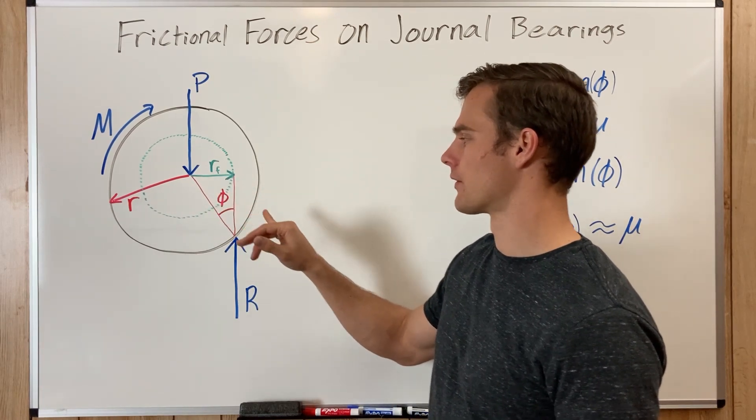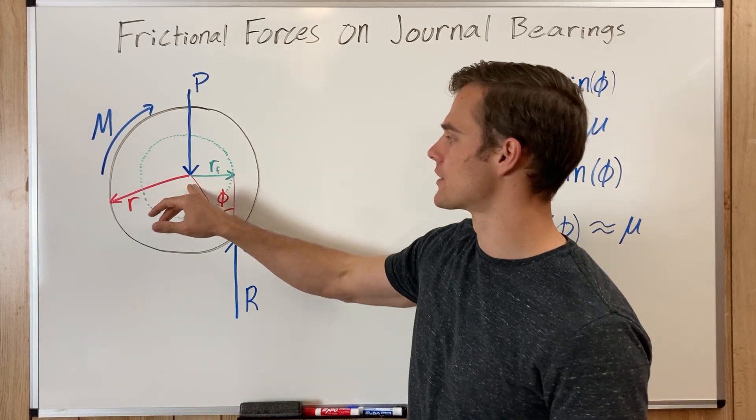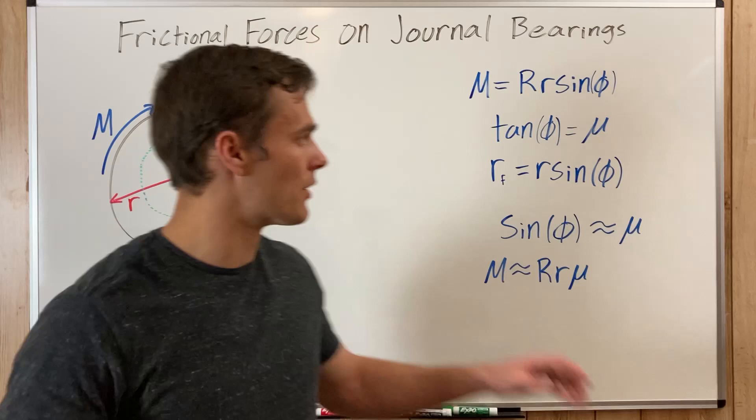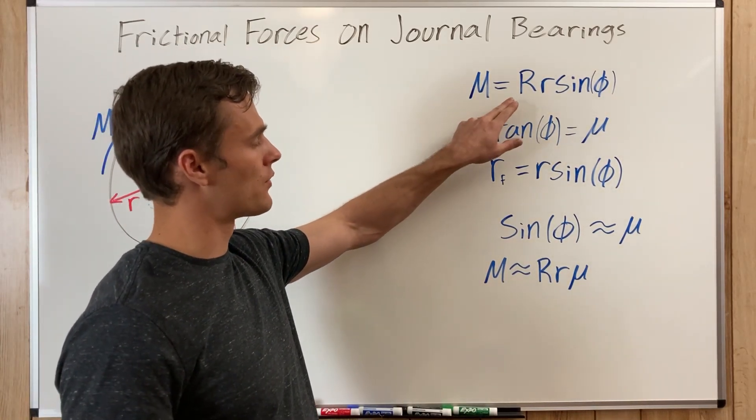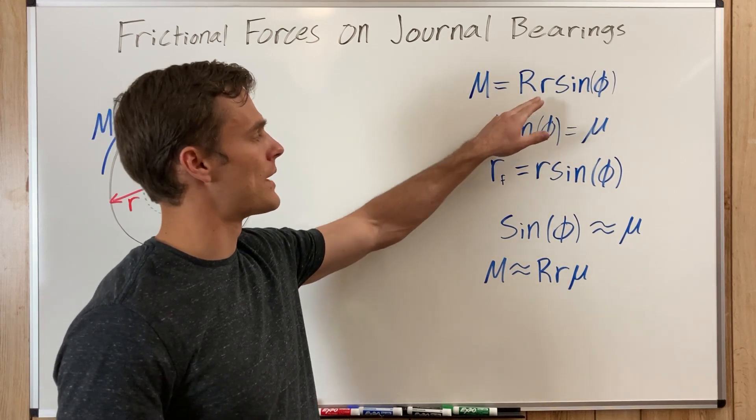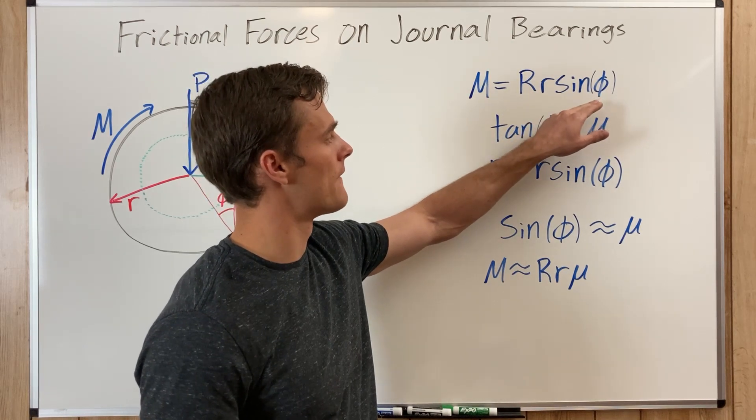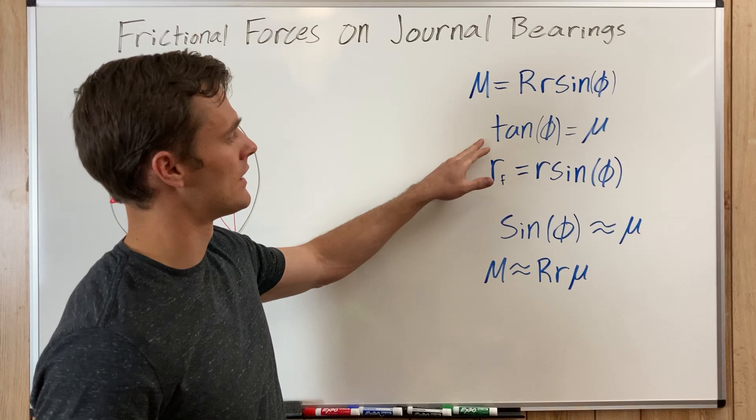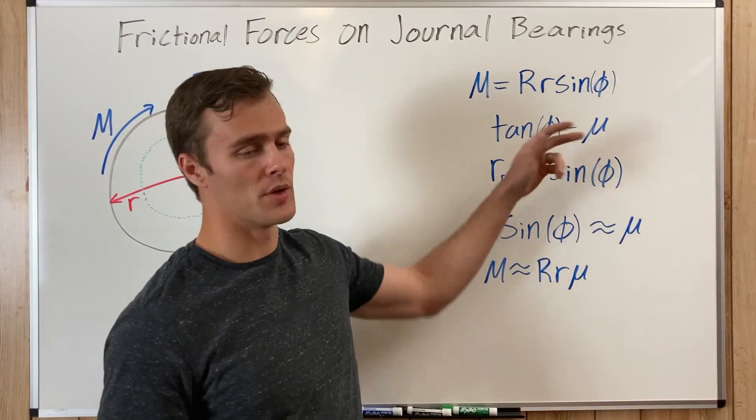So summing moments about the center of the axle, we get this equation here where M equals the reaction force big R, capital R, times the radius of the axle times the sine of phi. And the way we get phi is we can take the tangent of phi and that equals mu.